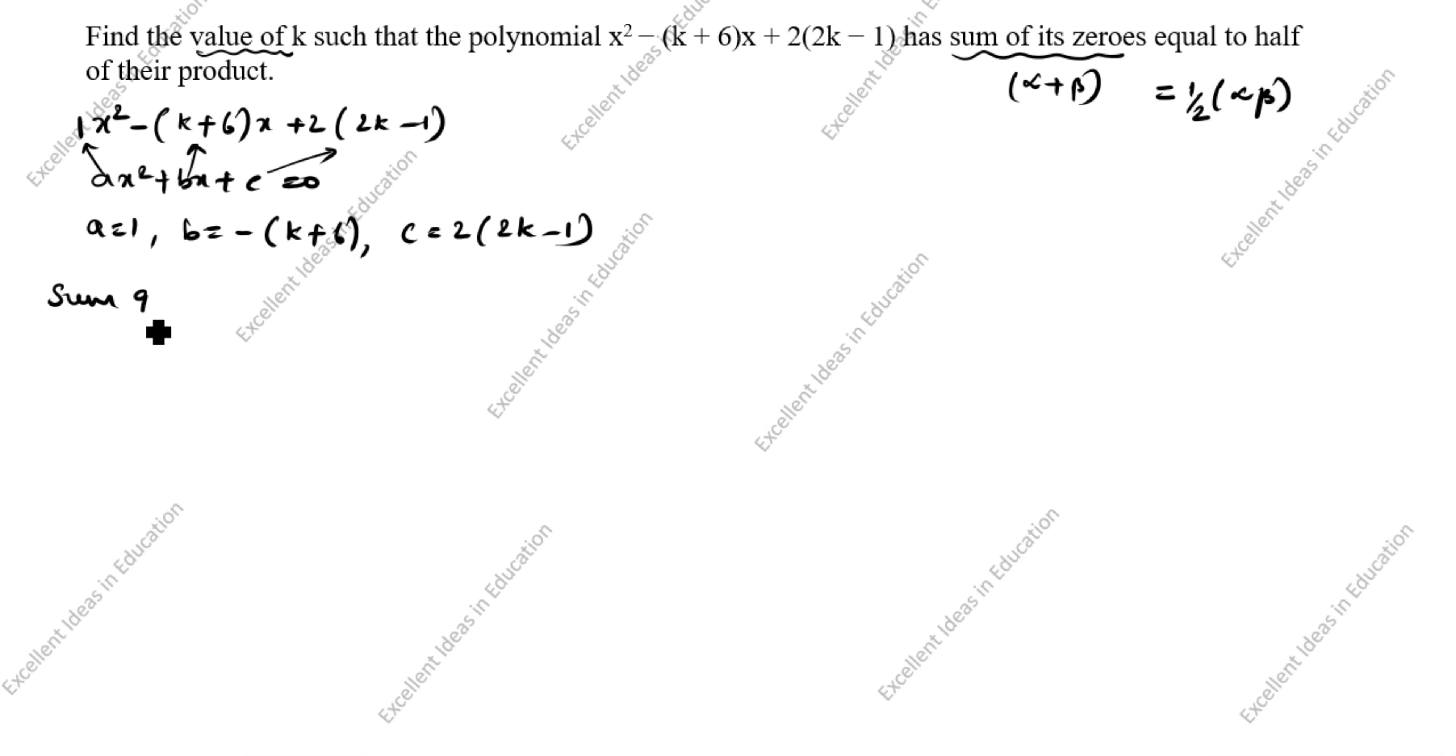Next, sum of the zeros. Sum of zeros is α + β = -b/a. What is b? b is -(k + 6), minus is already there, so it comes as plus k + 6 divided by a, which is 1. So α + β = k + 6. This is the first equation.